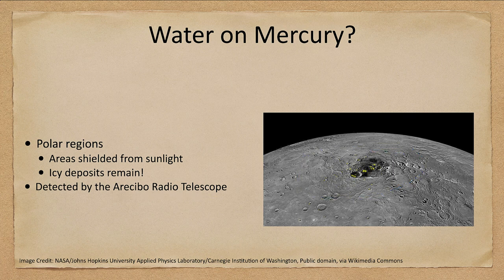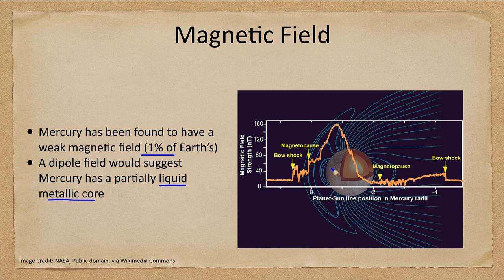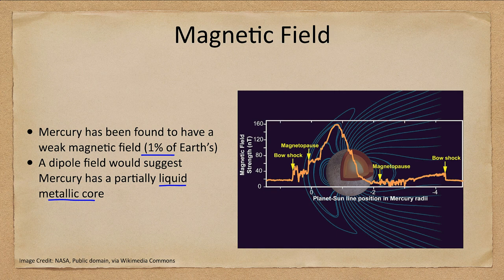Mercury does have a magnetic field, but a very weak one — only about 1% of Earth's — and that suggests Mercury has a partially liquid metallic core. A lot of the material from the solar wind is pushed back; the field is not completely symmetrical because Mercury is so close to the Sun. The field is deformed on the near side and stretched out beyond, somewhat similar to Earth's magnetosphere. It is much, much smaller than Earth's magnetic field and does not offer the same protection that Earth's magnetic field offers to us.